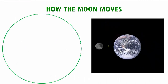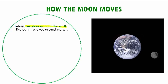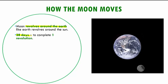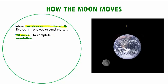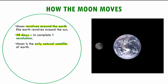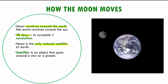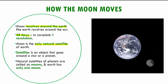Now we will see how exactly the moon moves. The moon revolves around the earth in the same way that our earth revolves around the sun, and this moon takes 28 days to complete one revolution. The moon is the only natural satellite that earth has. Satellites are generally objects that go around stars or planets, and natural satellites of planets we call moons. Earth has only one natural satellite, which is the moon.